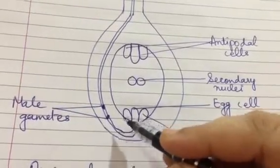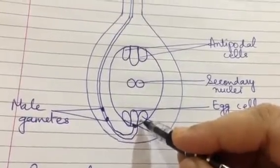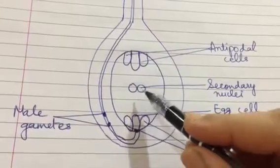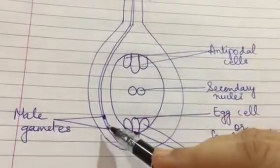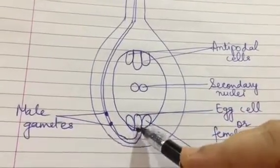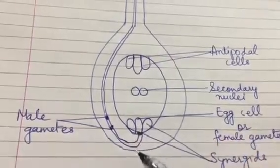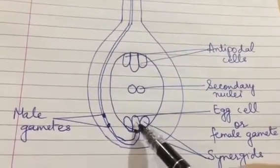Now the male nucleus has divided into two male gametes. Now there is an egg cell which is protected by the synergids and there are two secondary nuclei in the center. One of the male gametes would fuse with the egg cell or the female gamete to form the zygote.